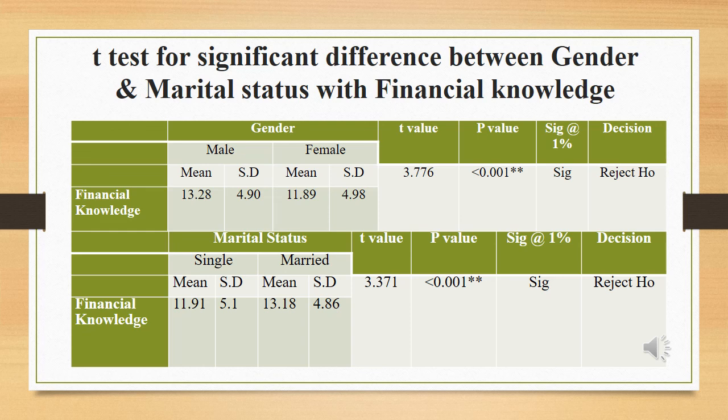The result indicates that at 1% significance level, the null hypothesis is rejected, which indicates that there is a significant difference between gender, marital status, and financial knowledge.